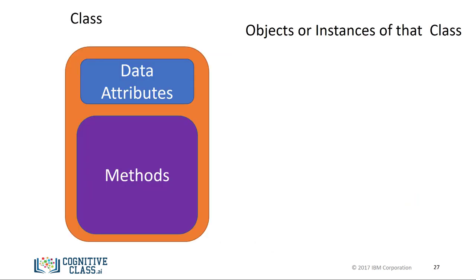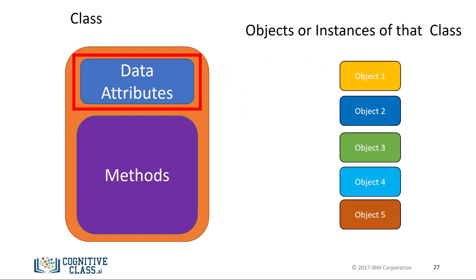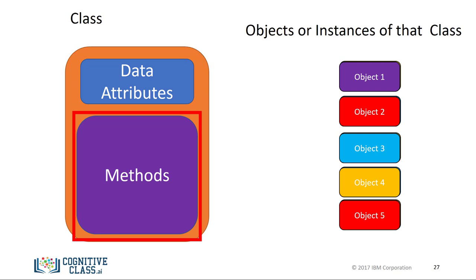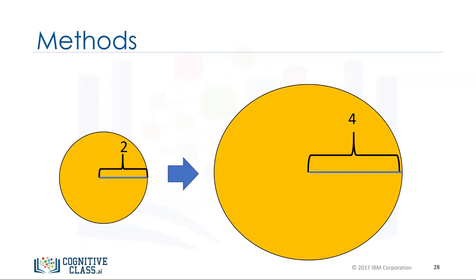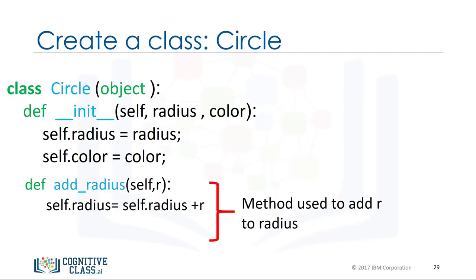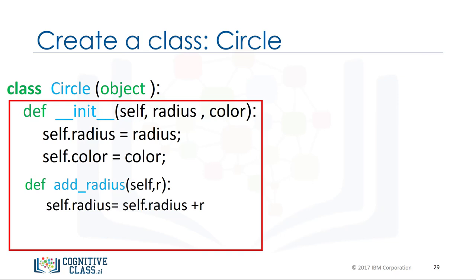Let's discuss methods. Data attributes consist of the data defining the objects. Methods are functions that interact with and change the data attributes of the object. Let's say we would like to change the size of a circle — this involves changing the radius attribute. We add a method add_radius to the class circle. The method requires self as well as other parameters; in this case we are going to add a value R to the data attribute radius.